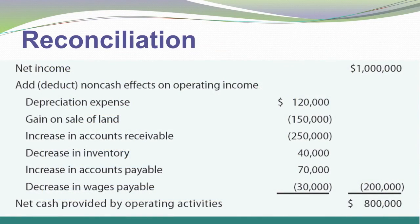Here I chose to start with net income — we might start with a different measure of income in some cases, but for illustration we'll start with net income. And you can see we have various adjustments, adds and subtracts, that come up with $800,000 cash from operating activities. This is exactly the same amount that we came up with under the direct approach, but calculated in a different fashion.